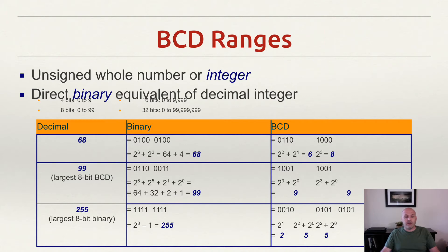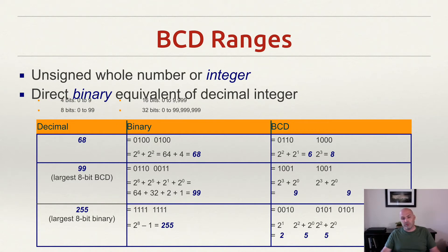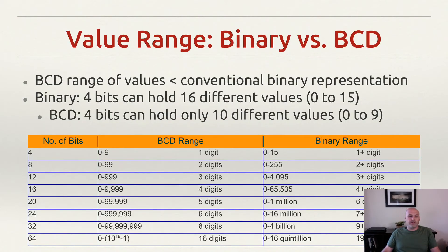However, looking at the number 255 — the largest number we can express with 8 bits of unsigned binary — in unsigned binary it's 11111111, or all ones. In binary coded decimal, we need an extra nibble, another 4 bits, to express 0010 for the 2, and then 0101 twice for the 55. Let's also see how the range plays out over different numbers of bits, from 4 bits representing one decimal digit all the way up to 64 bits representing 16 decimal digits or a 19-digit binary range.